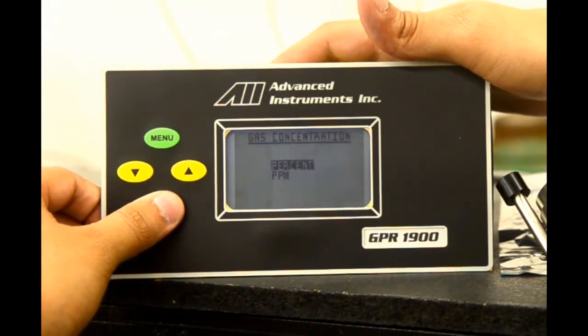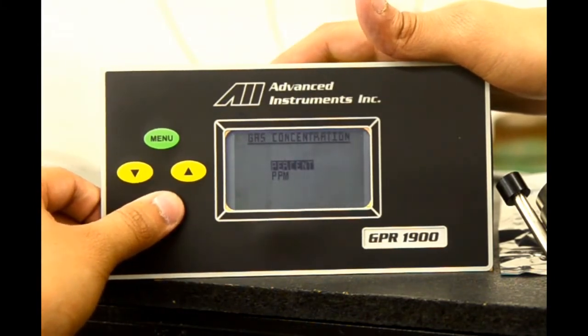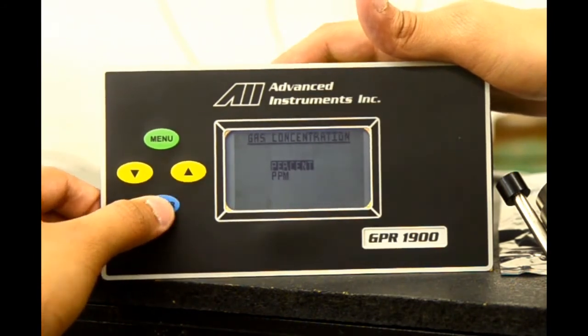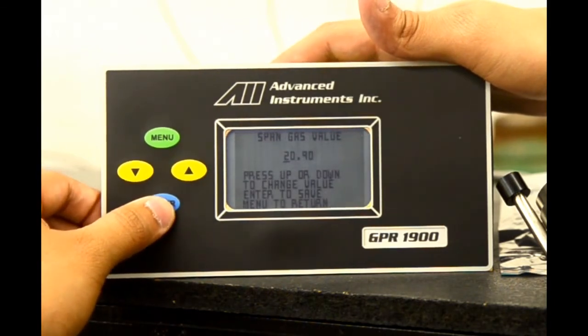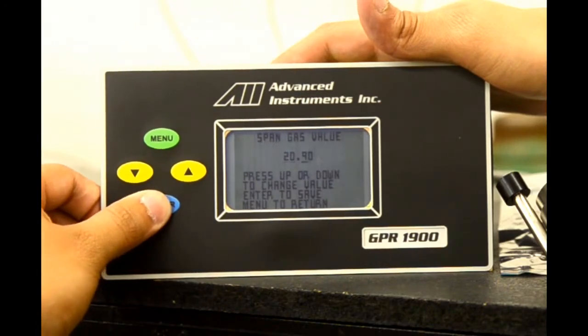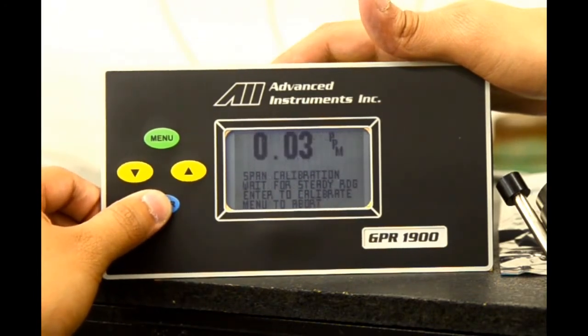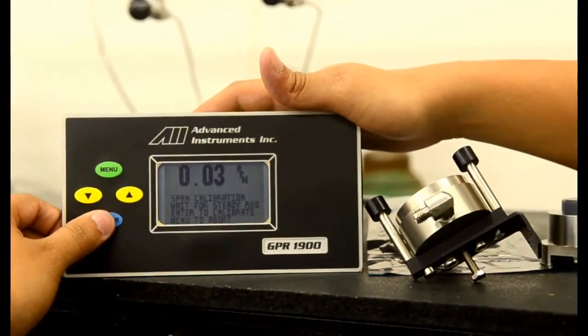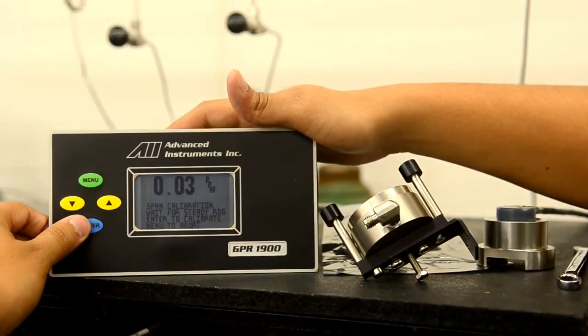We will be performing an air calibration. So we select the percent. But we can easily do a PPM calibration as well. We select enter on percent. And it is preset at 20.9, which is the amount of oxygen present in air. We select enter to scroll through and are taken to the screen that shows a current reading of the analyzer.